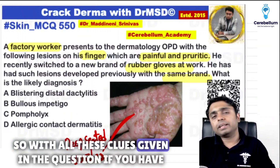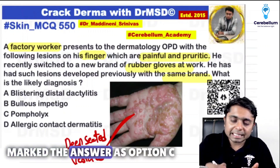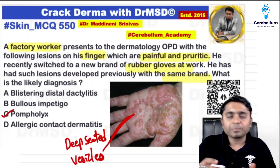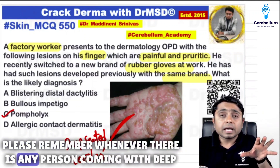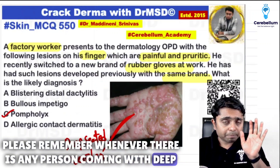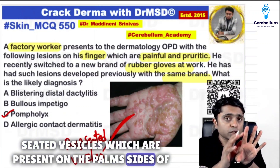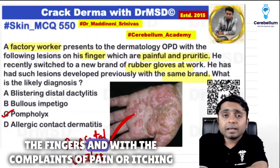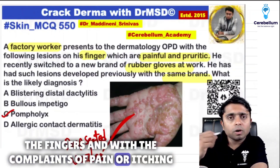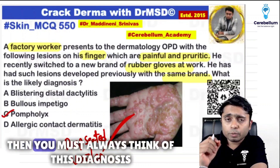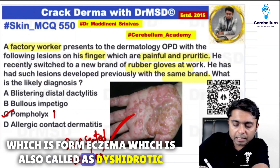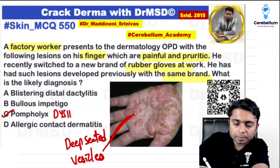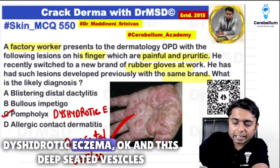So with all these clues given in the question, if you have marked the answer as option C, pompholyx, you are absolutely correct. Please remember: whenever a person presents with deep seated vesicles over the palms and sides of the fingers with complaints of pain and itching, you must always think of pompholyx, which is also called dyshidrotic eczema.